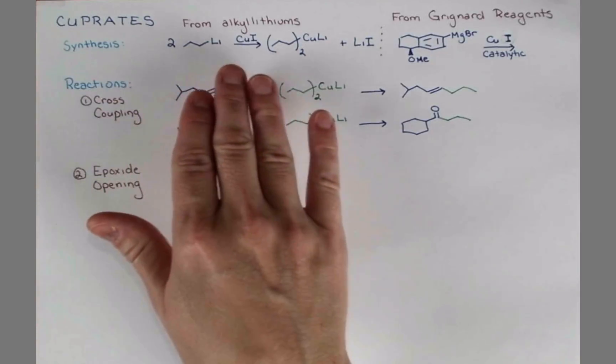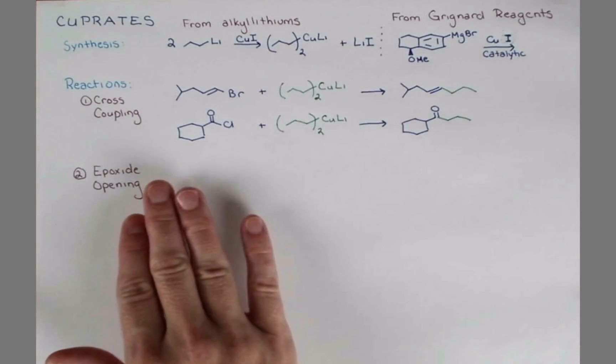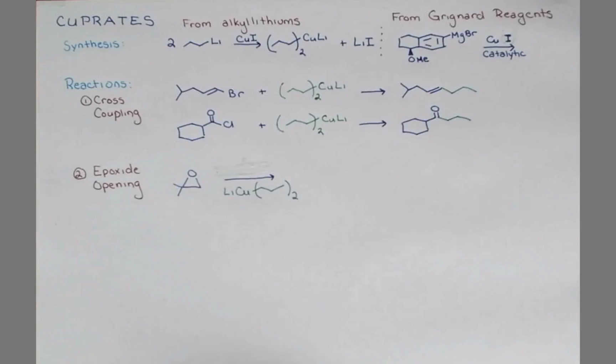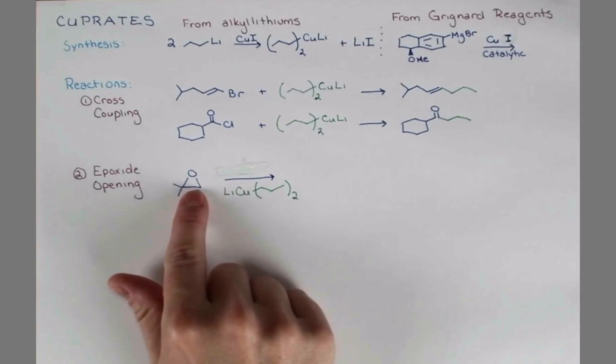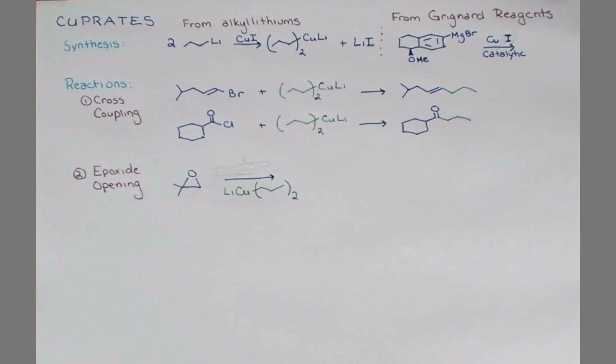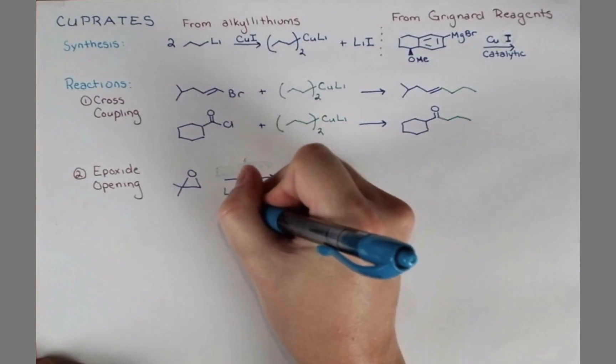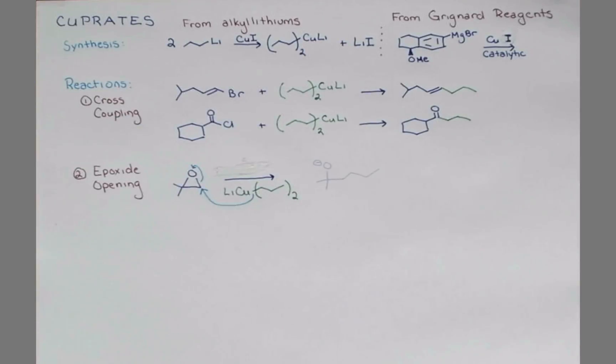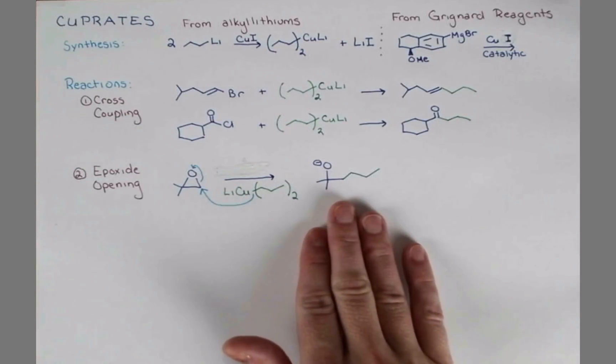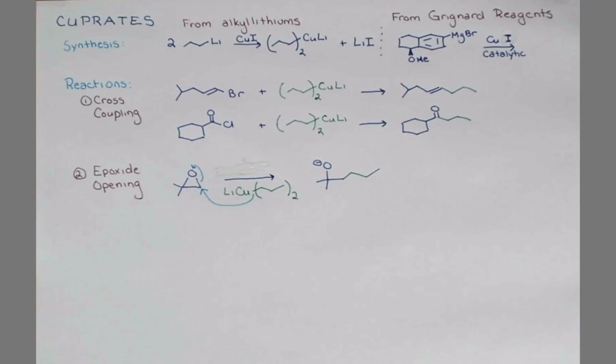Cuprates like organolithiums and Grignard reagents can be used to open epoxides. Just like the other organometallic reagents, the cuprate attacks at the least sterically hindered carbon atom, opening up the epoxide and the arrow pushing looks like this. This produces an alkoxide that can be treated with water in an aqueous workup to give the alcohol.